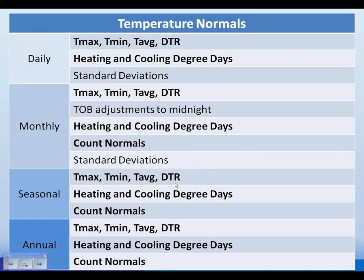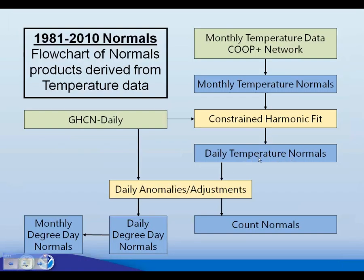Once we have the daily temperature normals, everything else falls out from there. The next intermediate step is daily anomalies and adjustments — we take the daily data and adjust it to reflect what the monthly normals are. From there we get the count normals, which in AWIPS will show as the number of days where T-max is greater than 90 for a given month. We also produce daily degree day normals, which are summed up to get monthly, seasonal, and annual degree day normals.